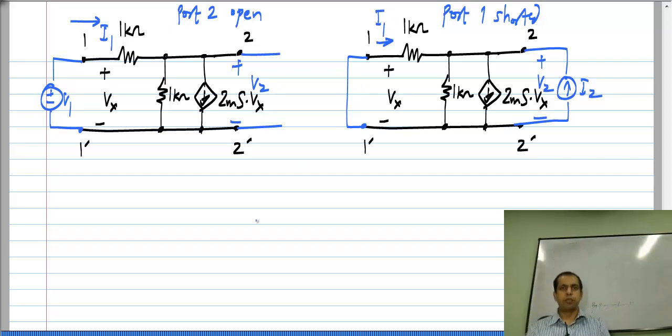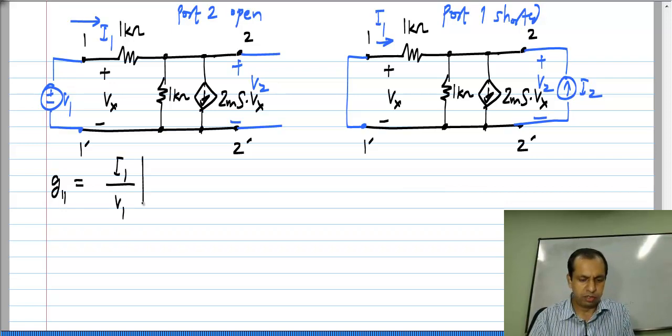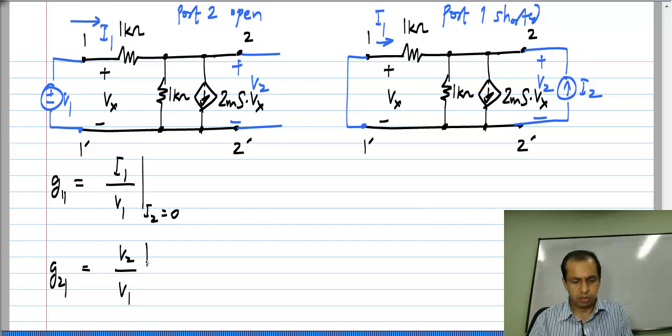And from these I will get all four parameters. G11 I get from this, it is I1 by V1 with I2 equal to 0. G21 also I get from this which is V2 by V1 with I2 equal to 0.